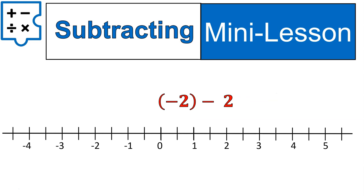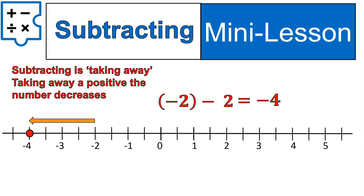Now, if I have negative two and I subtract two, that rule still applies. Where I'm starting on the number line doesn't matter — I am subtracting positive two, which means I'm decreasing again. So negative two minus two gives me negative four. Subtracting is taking away, and one way of thinking about it is: you take away a positive, that means it's decreasing or getting less.